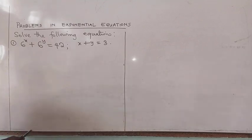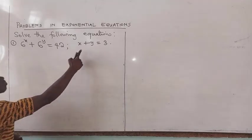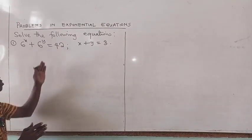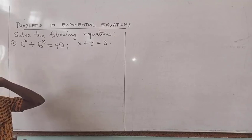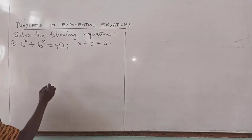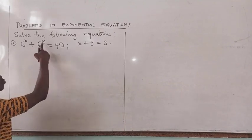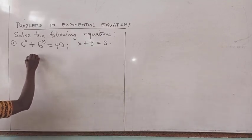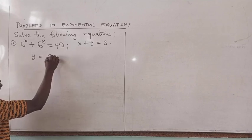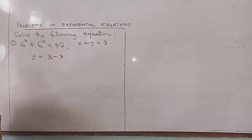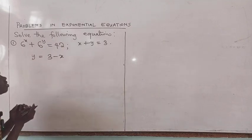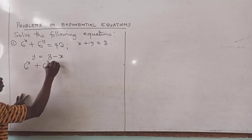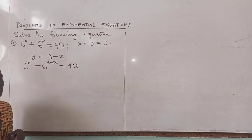So what should I do? From equation two, I'm going to make y the subject of the formula. That gives me y equal to 3 minus x. I then substitute this into the first equation, and that gives me 6 raised to the power x plus 6 raised to the power 3 minus x equal to 42.